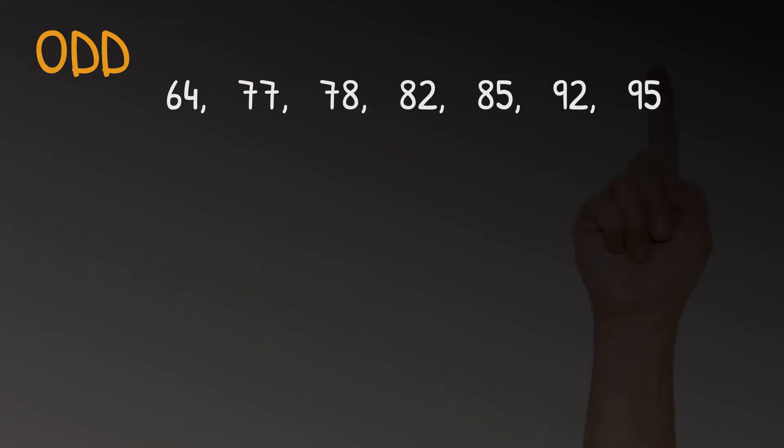Now, you can obviously have an odd number of values in your data set or an even number. So first, we're going to deal with an odd number of values. For this first data set, we have an odd number of values and we want to find Q1, Q2 and Q3. So we start by finding Q2 or the median by crossing off the values at each end until we get to the middle, which in this case is 82.